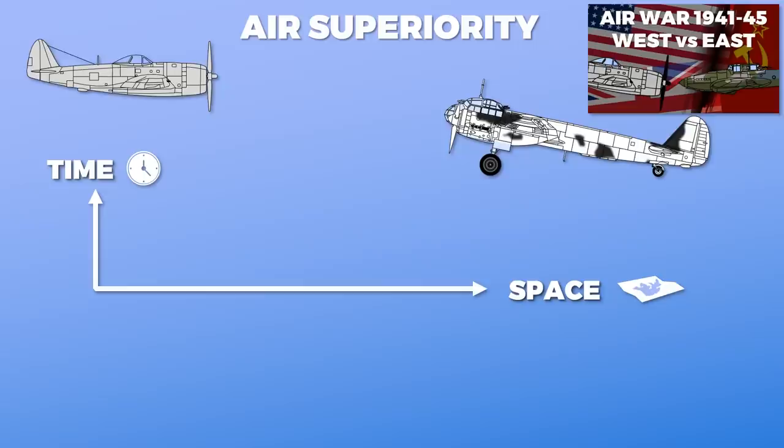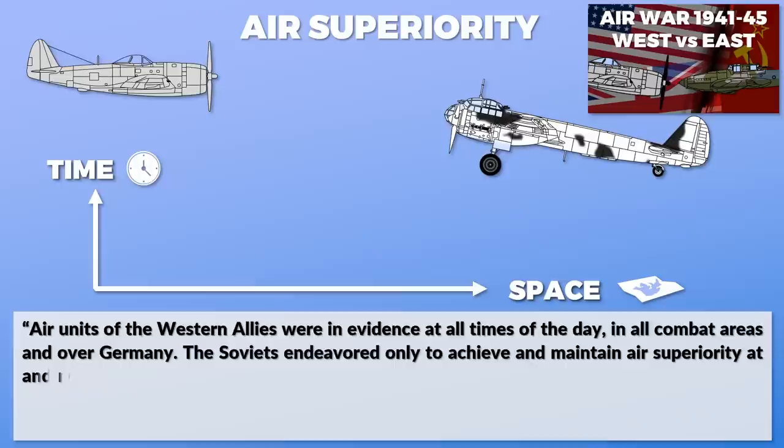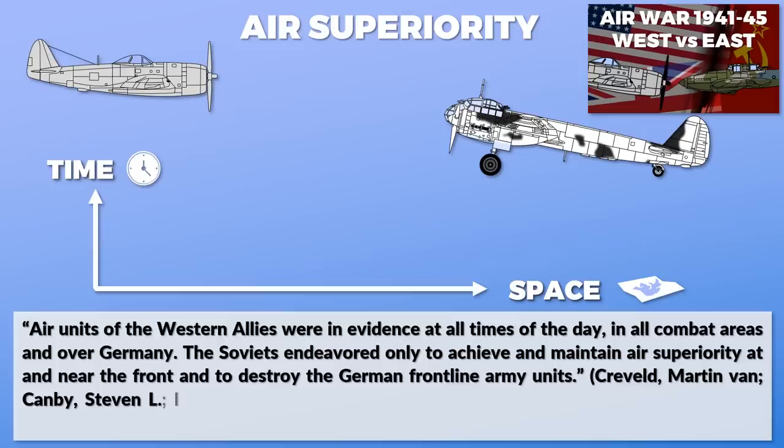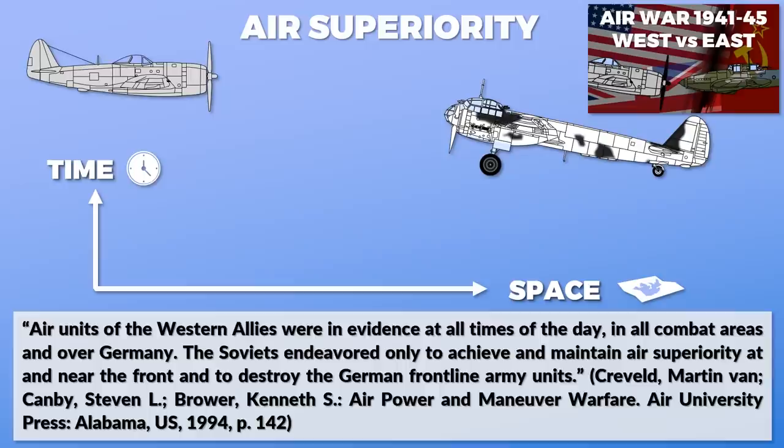air units of the Western Allies were in evidence at all times of the day, in all combat areas, and over Germany. The Soviets endeavored only to achieve and maintain air superiority at and near the front, and to destroy the German frontline army units. As such, there is a distinction between theater and local air superiority.